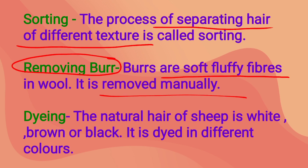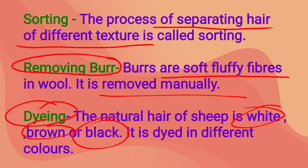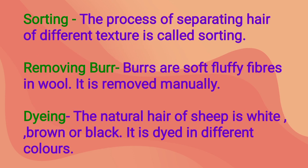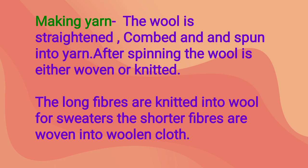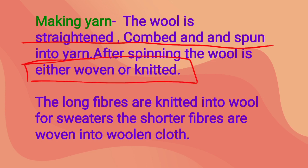Next we dye the wool, because the original color of sheep's hair is only white, brown, or black. To get the many different colors seen in the market, we use the process of dyeing. Finally, we make yarn — the wool is straightened, combed, and then spun into yarn. After spinning, the wool is either woven or knitted. Long fibers are knitted into wool for sweaters, while short fibers are woven into woolen cloth.